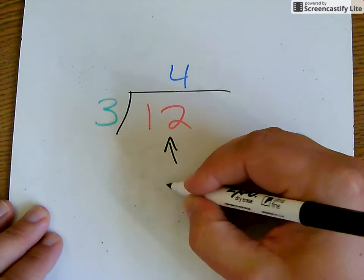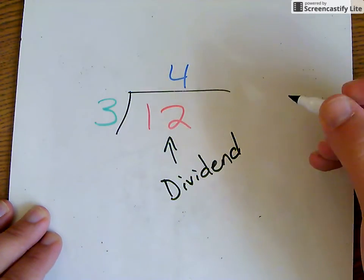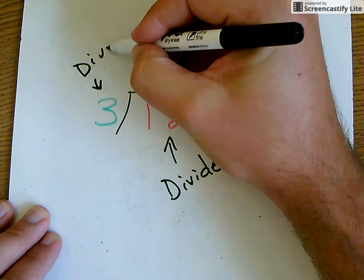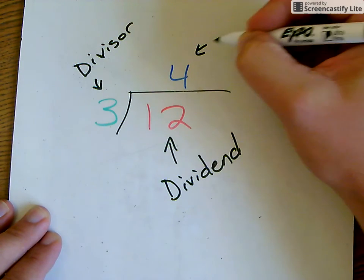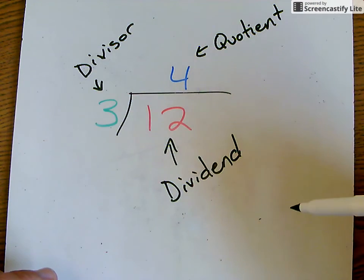So again, this is the dividend. On the outside, it's the number we are dividing by, so this is the divisor. And then lastly, this is the answer, so this is what we call the quotient.